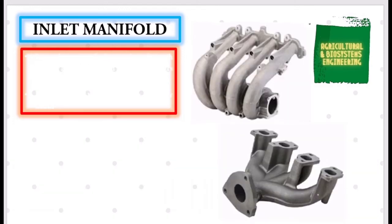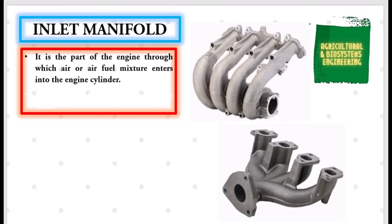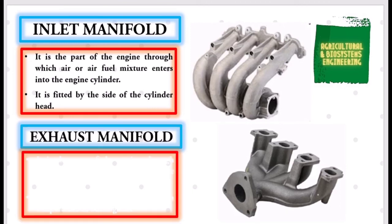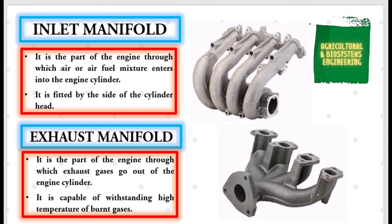Next, inlet manifold. It is the part of the engine through which air or air-fuel mixture enters into the engine cylinder. It is fitted by the side of the cylinder head. And lastly, the exhaust manifold. It is the part of the engine through which exhaust gases go out of the engine cylinder. It is capable of withstanding high temperature of burnt gases.